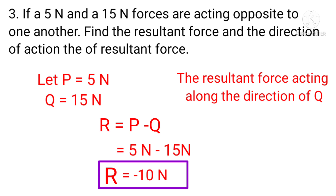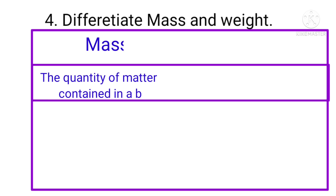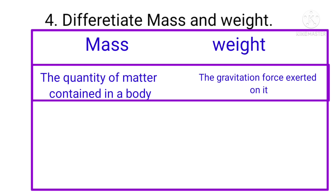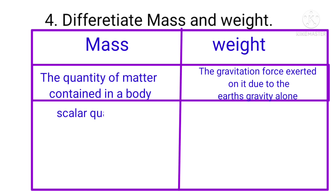Fourth question: differentiate mass and weight. Mass is the quantity of matter contained in the body. Weight is the gravitational force exerted on it due to the earth's gravity alone. Mass is a scalar quantity; weight is a vector quantity.